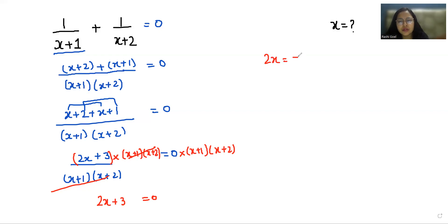So 2x is equals to negative 3 and then we divide both sides by 2. x is equals to negative 3 by 2 or 1 whole 1 by 2 with negative side. This is the value of x.